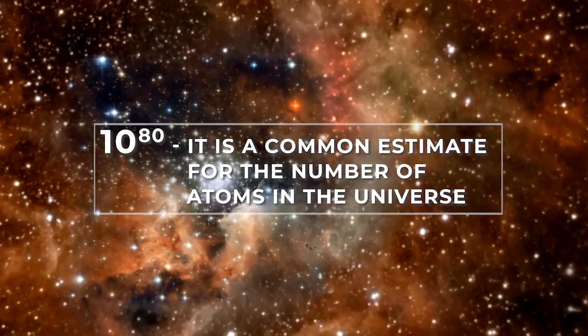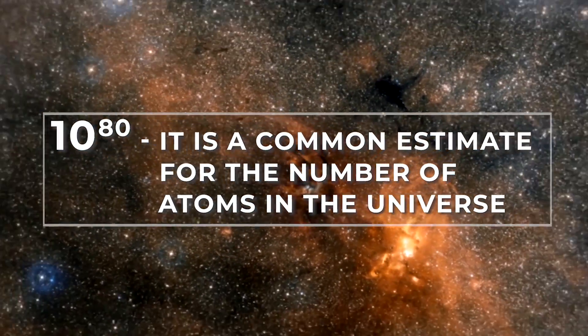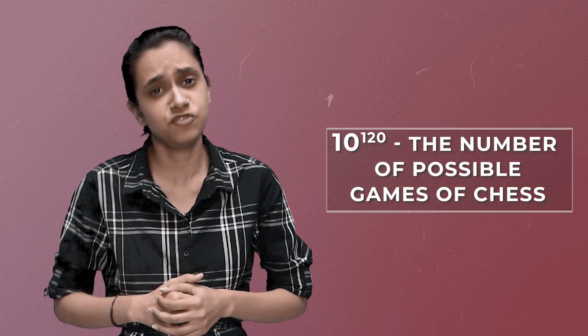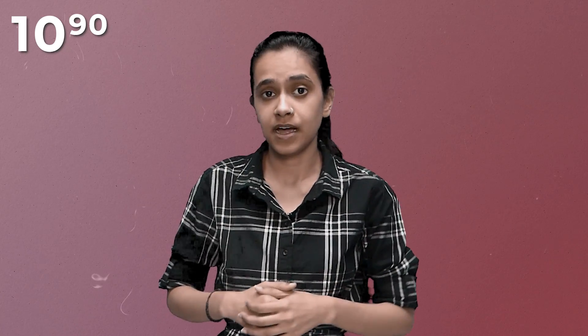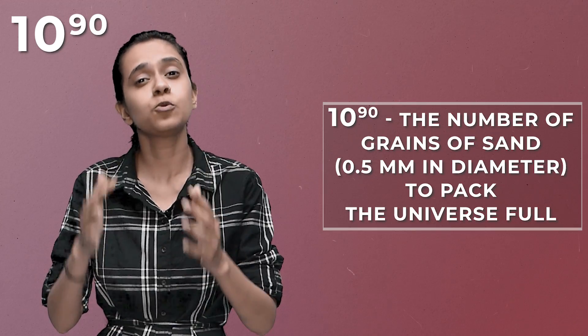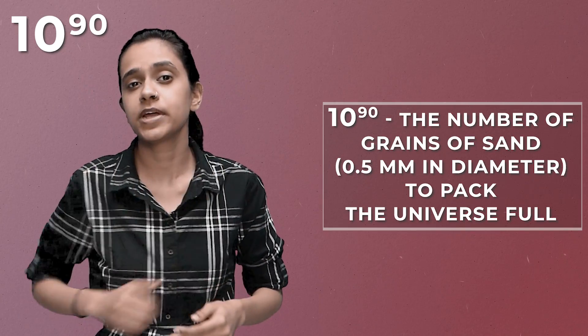The whole universe is estimated to contain around 10 to the power 80 atoms. Surprisingly, this is still less than the number of possible games of chess. 10 to the power 90: to visualize this, if you had to fill the entire universe with sand, packed to the brim with no empty space, that number of grains would equal 10 to the power 90.